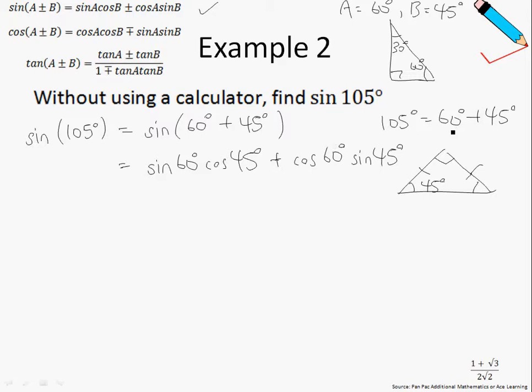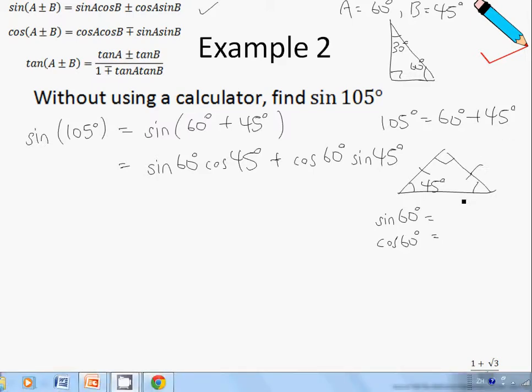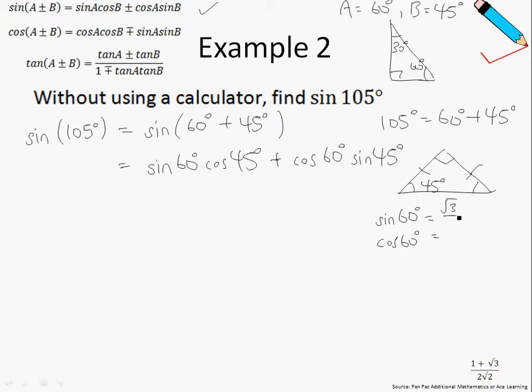And then, using the ideas of special angles, let me just write down a list of how these can be broken down. So the sine of 60 degrees is just √3/2 and the cosine of 60 degrees is just 1/2. On the other hand, the sine of 45 degrees is √2/2 and this is also similar for the cosine of 45 degrees, which is also √2/2.